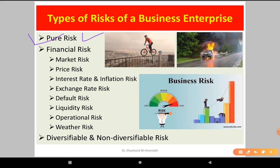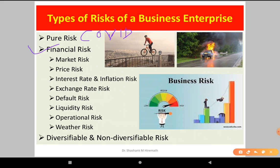Traditional management has always focused on pure risk in the earlier days rather than focusing more on financial risks. The financial risk is a more dynamic risk which affects the business. In pure risk, nothing is in your hands — it is an uncontrollable factor. If there are accidents, natural calamities, or if you think about the present situation of COVID, these types of risks are called pure risk, which can be insured though they are uncertain. But in case of a loss of business, it leads to financial risk.